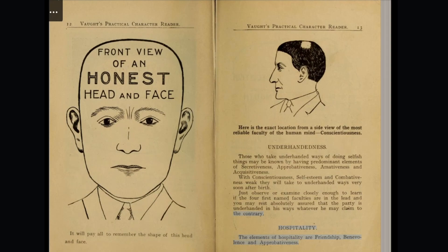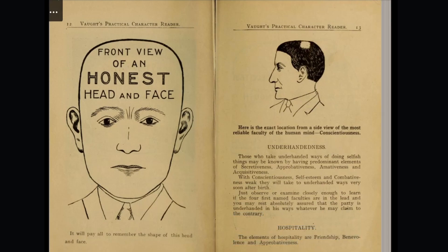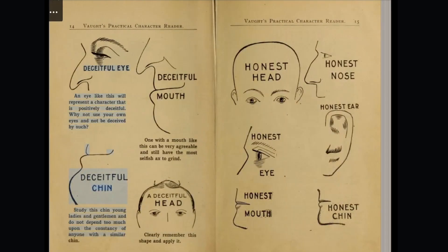Hospitality. The elements of hospitality are friendship, benevolence, and approbativeness. A deceitful eye like this will represent a character that is positively deceitful. Why not use your own eyes and not be deceived by such? Study this deceitful chin, young ladies and gentlemen, and do not depend too much upon the constancy of anyone with a similar chin. One with a deceitful mouth can be very agreeable and still have the most selfish acts to grind. Clearly remember this shape and apply it.